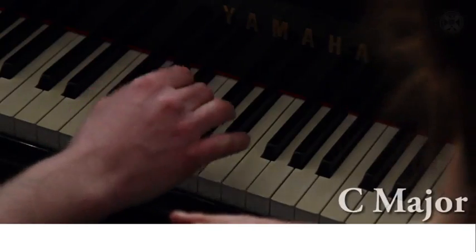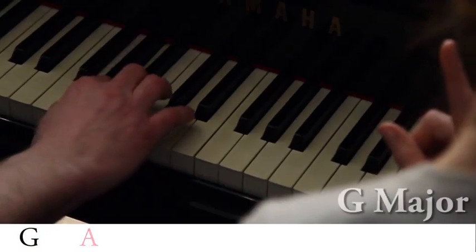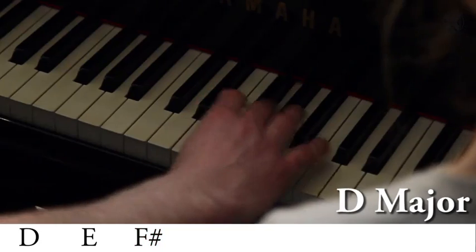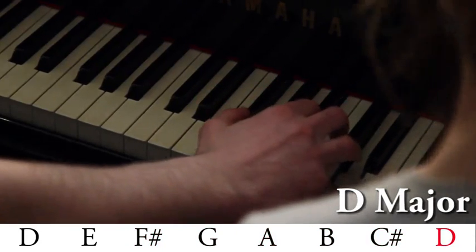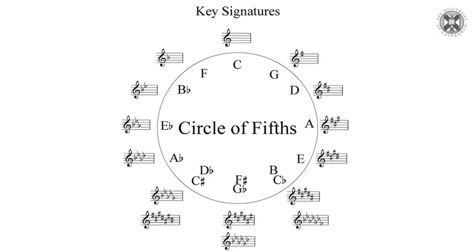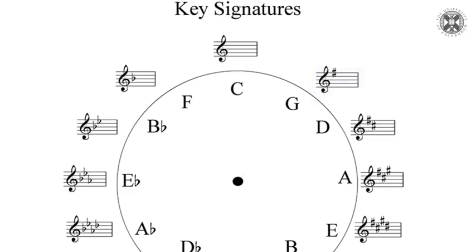Let's start with C. C major, as we know, is signified by having no sharps and no flats — that's the key signature. G, however, contains one sharp: F sharp. And D has got two sharps — it's also got an F sharp, and now it's also got a C sharp on top. So if we look at the circle of fifths, the key signature for C has no sharps or flats. This makes sense because when we play C major on the piano we only use the white notes. Moving clockwise to G major, we see it's signified by having an F sharp. The next stage clockwise is D major, with an F sharp and a C sharp.